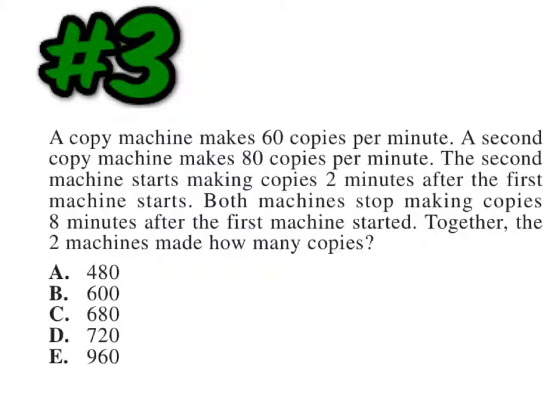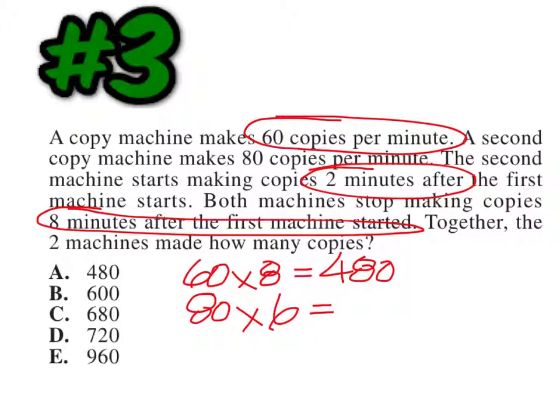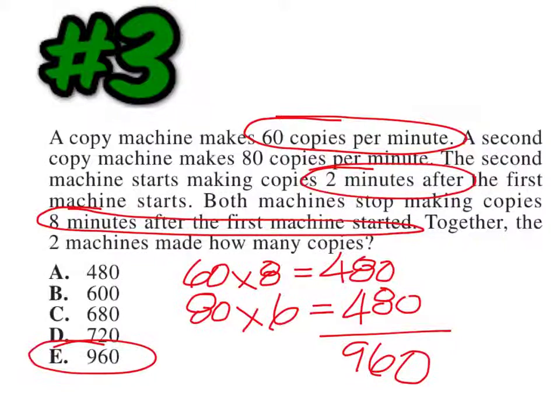Three answers are the same, one is different for what was turned in. So, we're going to look at the first copy machine. It makes 60 copies per minute. And if you look down in the problem, both machines stopped making copies eight minutes after the first machine started, so that means 60 copies times eight is going to give me 480. And if the first one ran for eight minutes, the second one started making copies two minutes after, so that means it ran for six minutes. And that's going to be 80 times six, which is 480. Add those together to get 960, so the answer is E.